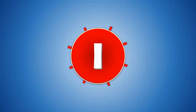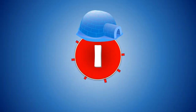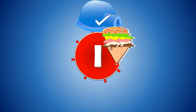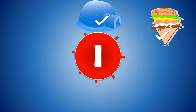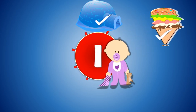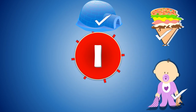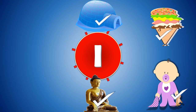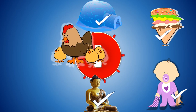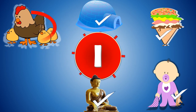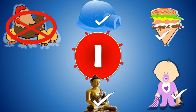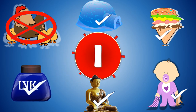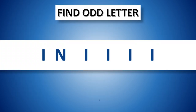I. I for igloo, correct, yes. I for ice cream, correct, yes. I for infant, correct, yes. I for idle, correct, yes. I for hen — no, it's wrong. I for ink, correct, yes. Find odd letter.